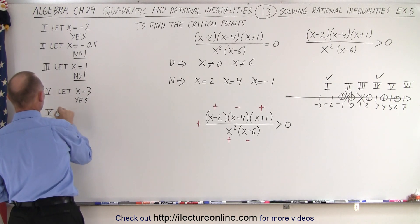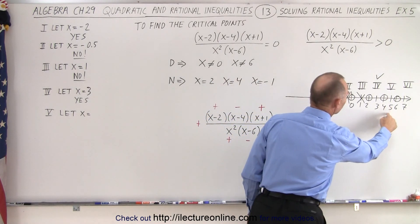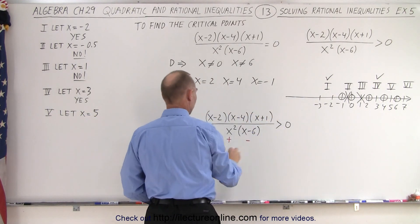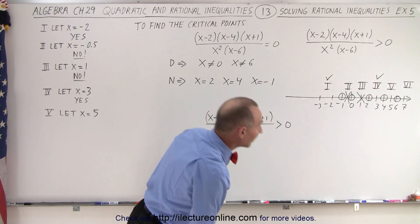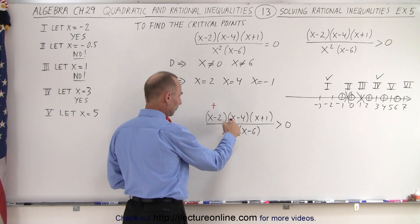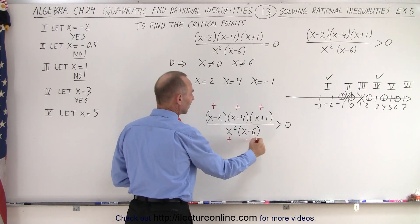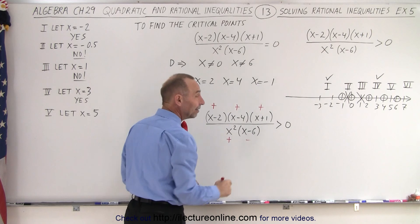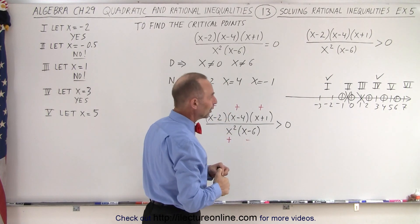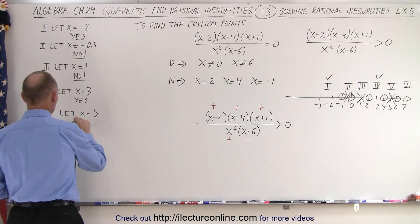For region five, we let x equal five, a number between four and six. Five minus two is three — positive. Five minus four is one — positive. Five plus one is six — positive. Five minus six is negative — only one negative. One negative means the whole fraction is negative, and negative is not bigger than zero. Therefore that region does not satisfy the inequality. The answer is no.